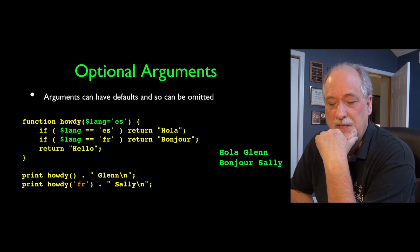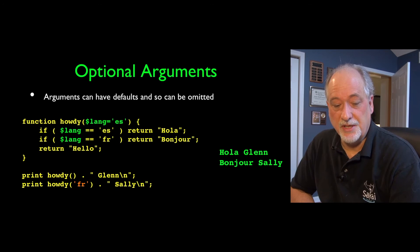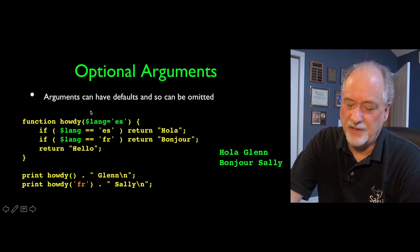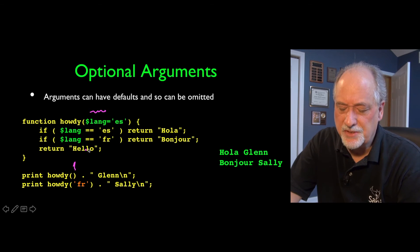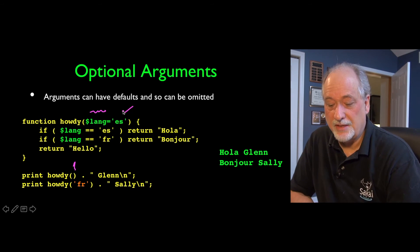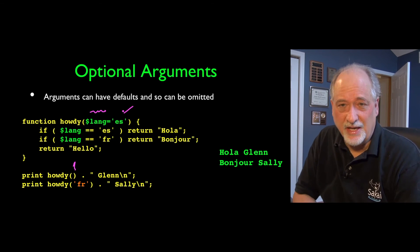I like how PHP does optional arguments. You simply say, if this argument doesn't exist, in this case, if lang is not presented as a, if it's missing from the arguments, set it to es. So that's the default. The es is the default in this particular thing.